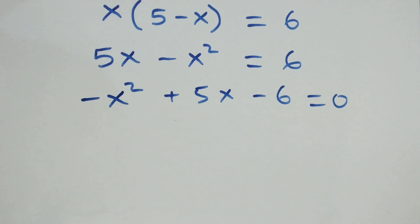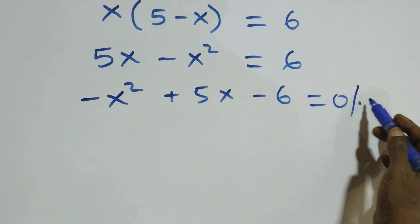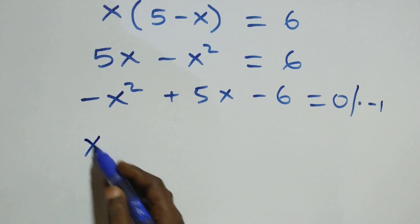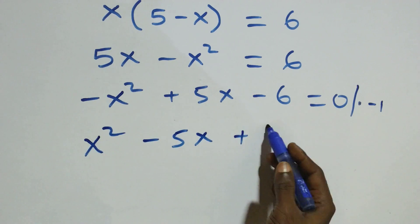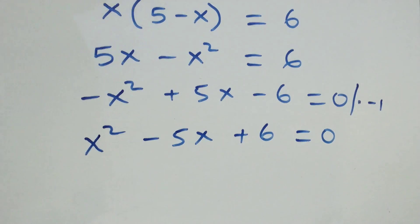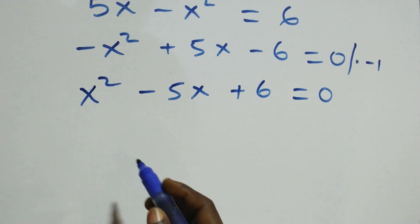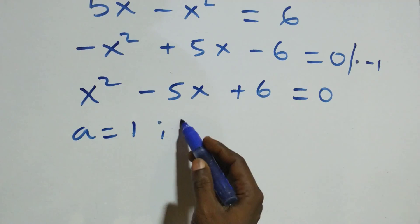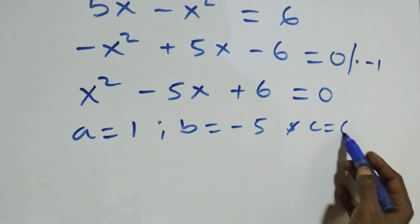We rearrange by taking six to the other side, giving us minus x squared plus five x minus six equals zero. We then multiply through by minus one, which gives us x squared minus five x plus six equals zero. We now have a quadratic equation.